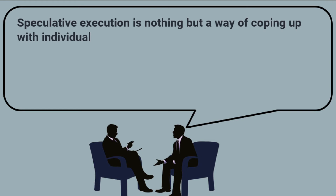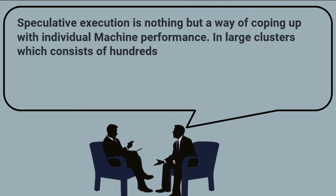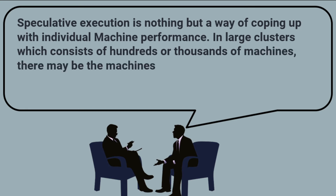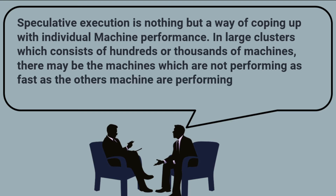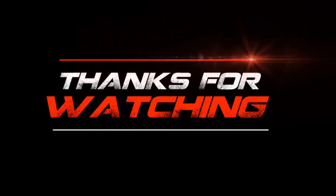Speculative execution is a way of coping with individual machine performance in large clusters. In clusters consisting of hundreds of thousands of machines, some machines may not be performing as fast as others. To identify those slow machines and help them cope with the rest, speculative execution is used.